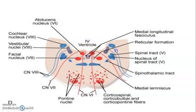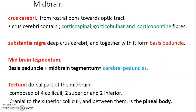The spinothalamic tract carries pain and temperature sensation. The medial lemniscus travels from fasciculus gracilis and cuneatus in the spinal cord, through nucleus gracilis and cuneatus in the medulla, up through the pons to the thalamus — carrying proprioception, vibration, and two-point discriminatory information. The reticular formation nuclei here include the locus coeruleus and raphe nuclei.